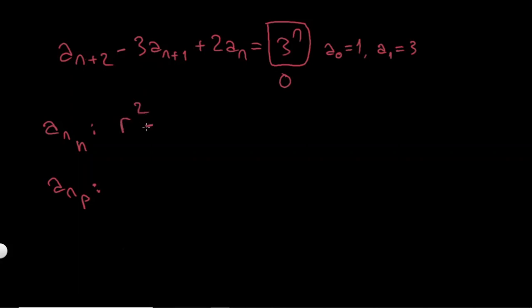So this will give us r squared minus 3r plus 2 equals 0. I won't go into details here. This gives me a_n equals A times 1 to the n plus B times 2 to the n. So this is my homogeneous solution.